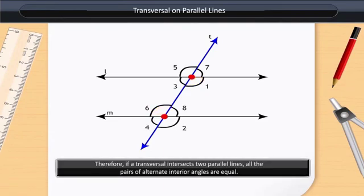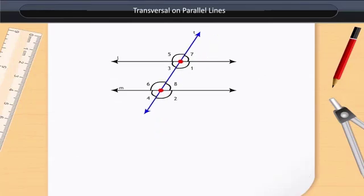Therefore, if a transversal intersects two parallel lines, all the pairs of alternate interior angles are equal. The measure of angle 3 and angle 1 is 180 degrees.